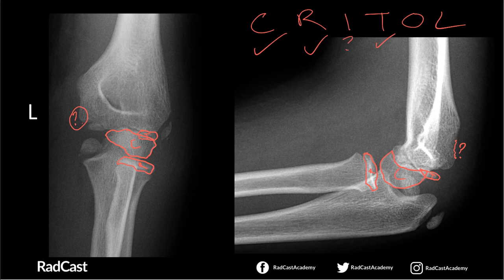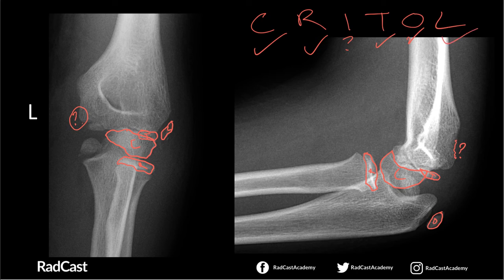We've got the trochlea and we're still missing the medial epicondyle. O for olecranon — it's quite difficult to see on the frontal view, but on the lateral view, there it is in all its glory. We've got the olecranon ossification centre. And finally, he should have a lateral or external epicondyle — and here it is. Often you can't really see it on the lateral view; it's better seen on the frontal. But something doesn't add up — we don't have a medial or internal epicondyle, yet we've got everything else.